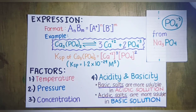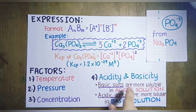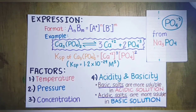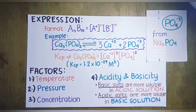For the last factor, acidity and basicity: the addition of an acid or base in a salt solution may increase or decrease the solubility of a salt. Specifically, basic salts are more soluble in acidic solution, while acidic salts are more soluble in basic solution. The solubility of a neutral salt is not affected by the addition of acid or base. If you're not yet familiar with the types of salts, watch my video on that topic — the link is in the description box below. Those are the things you need to know about the solubility product constant. Thank you for listening and good day!